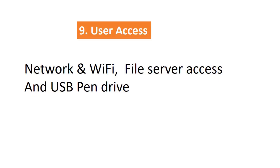Point number nine, user access. Ensure network access like VPN or Wi-Fi is granted as per business requirements and that access is reviewed regularly. For users that use USB pen drives, ensure that either a risk exception has been taken or an approval is in place. Ensure access to file servers or SharePoint drives is granted based on organizational functions and roles.